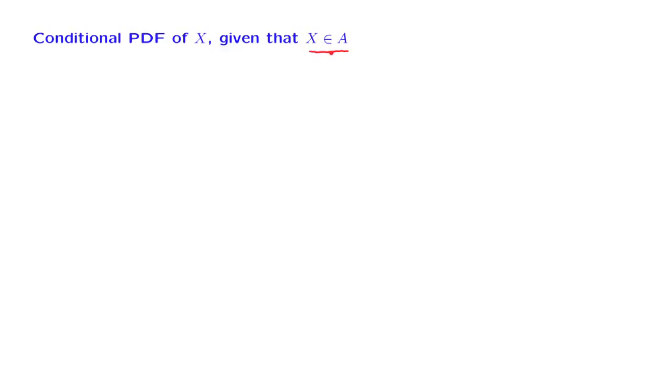When we condition on an event, without any further assumption there is not much we can say about the form of the conditional PDF. However, if we condition on an event of a special kind — that X takes values in a certain set — then we can actually write down a formula.